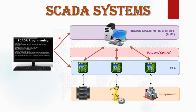SCADA is basically a software installed in a PC, and with the help of this software we control the whole processing plant or equipment. This is done with the help of PLCs and HMI — Human Machine Interface — which is connected to different PLCs. PLC is a microprocessor-based hardware device. A number of PLCs are connected to HMI, and equipment of the plant such as motors, machines, pumps, and valves are all connected to the PLCs.